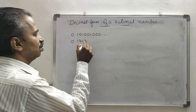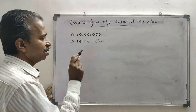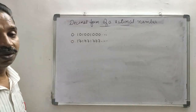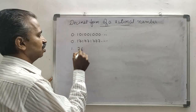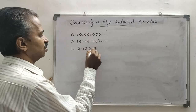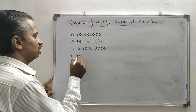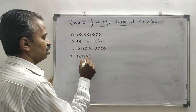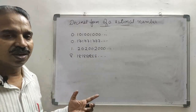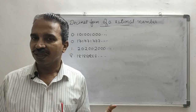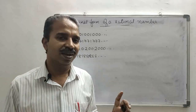If you write a number like 0.1717171717777..., that also is non-terminating and non-recurring, so it is an irrational number. Similarly, 1.2020020020000... and 8.1818181818888... are also non-terminating non-recurring decimals, and like that we can write infinitely many such numbers — they are all irrational numbers.